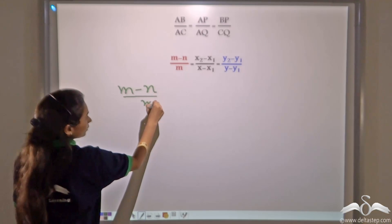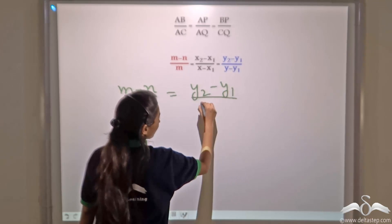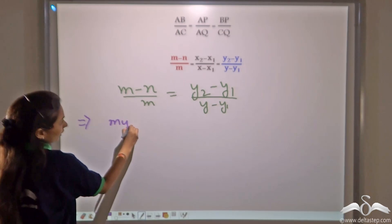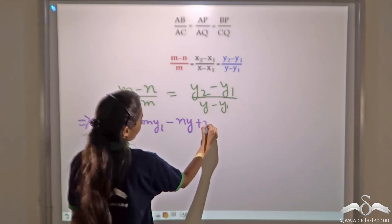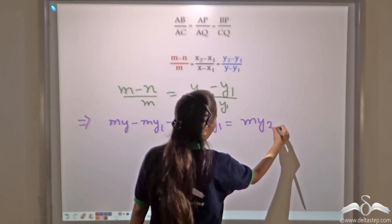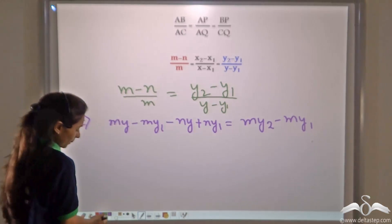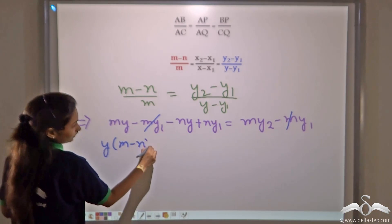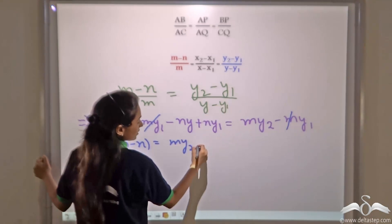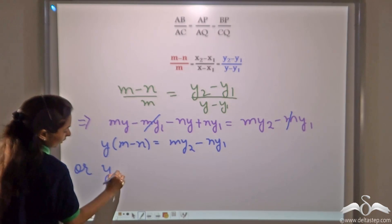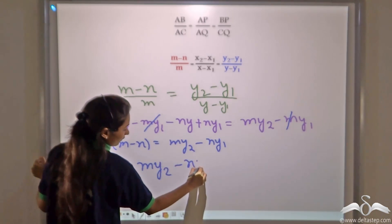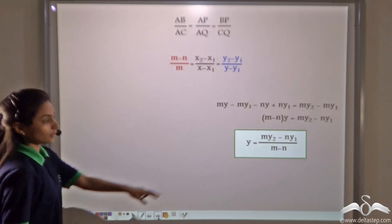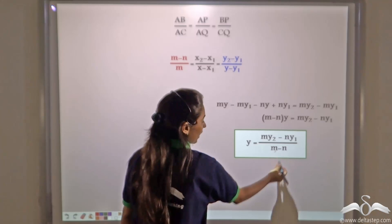Similarly, (M-N)/M = (y2-y1)/(y-y1). Cross-multiplying: My - My1 - Ny + Ny1 = My2 - My1. Cancelling My1 from both sides and taking y common: y(M-N) = My2 - Ny1, so the y-coordinate is y = (My2 - Ny1)/(M-N).